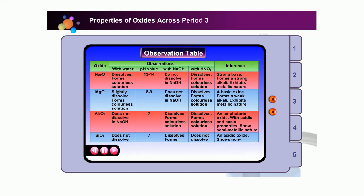From the table, we can say that the metallic oxides are basic oxides. They react only with acids to form salt and water. Non-metallic oxides are acidic oxides. They only react with alkalis to form salt and water.